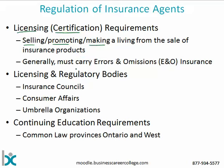In most cases — though not universally — people who have a life insurance license also have to carry errors and omissions (E&O) insurance. E&O insurance covers the liability discussed earlier: if a client has a concern with the agent that ends up in court, or in order to get to court, the agent might need support or money available to pay out claims — that's where the E&O insurance comes in.